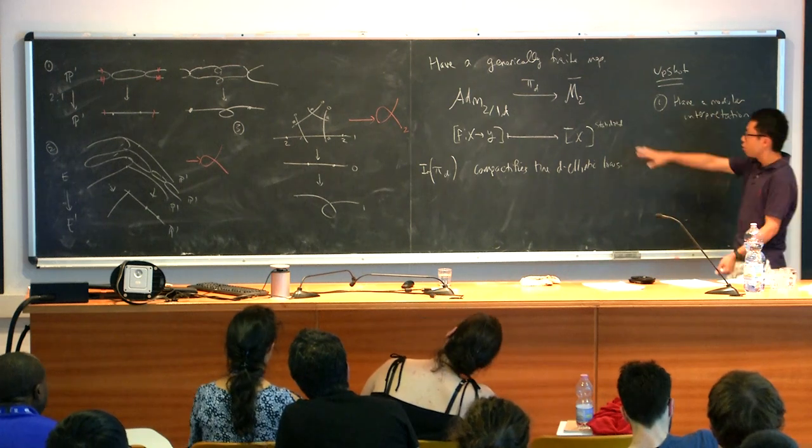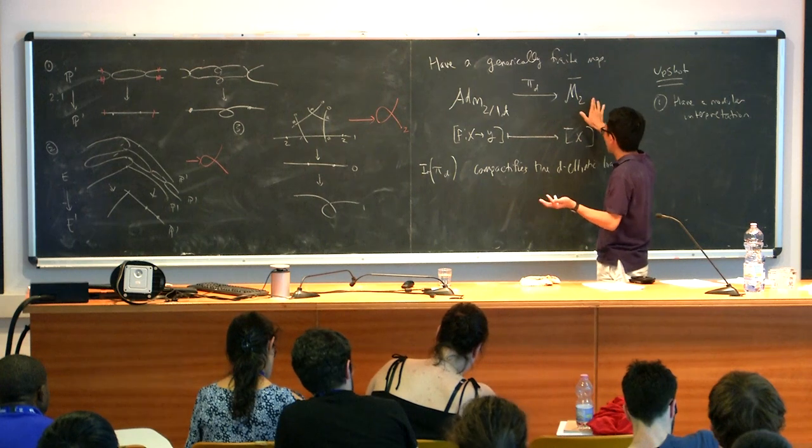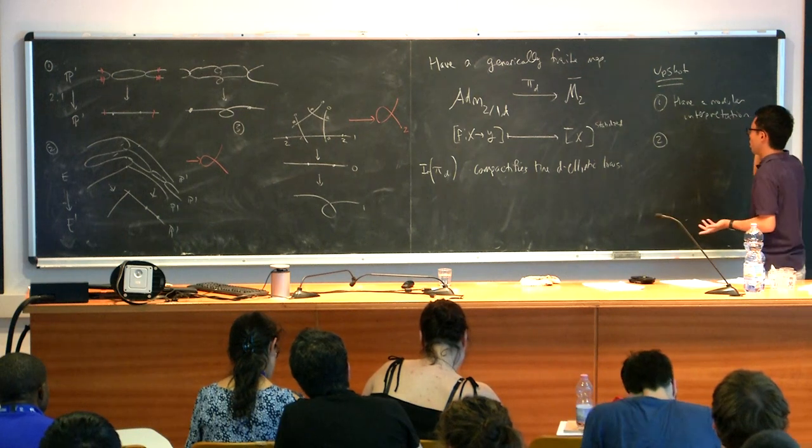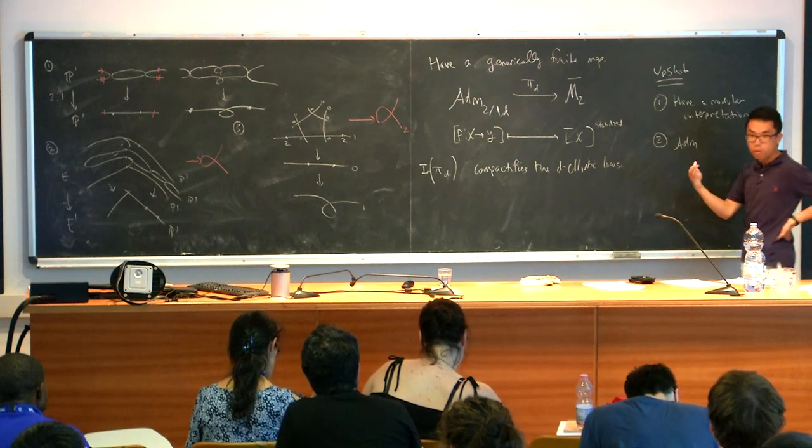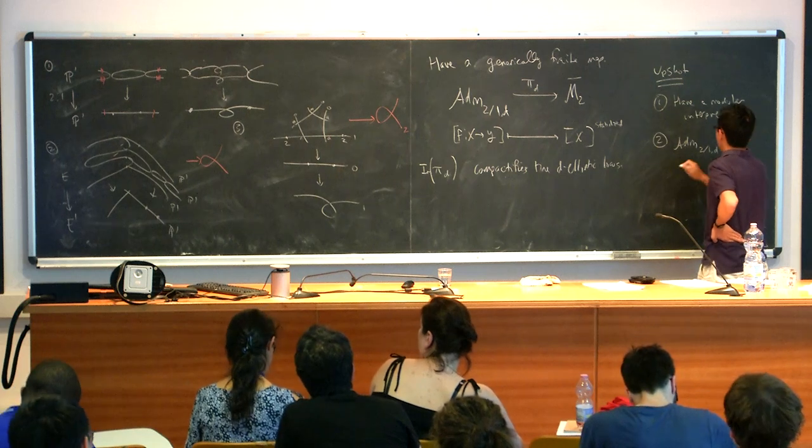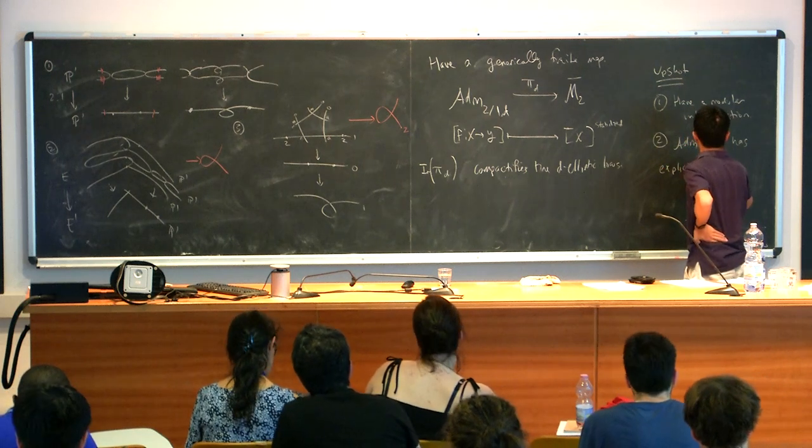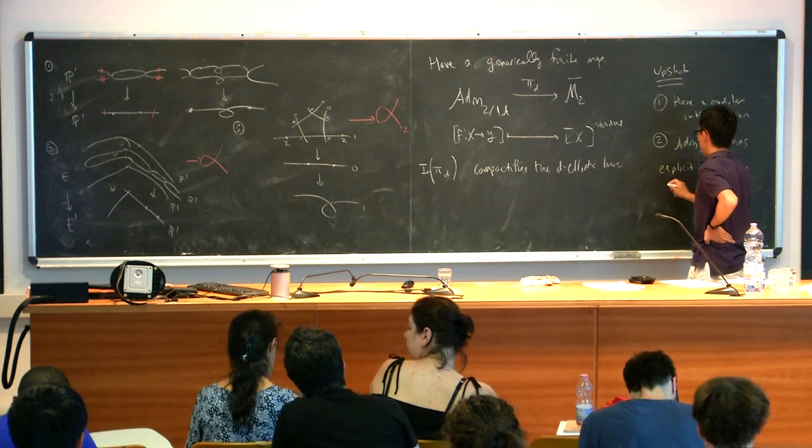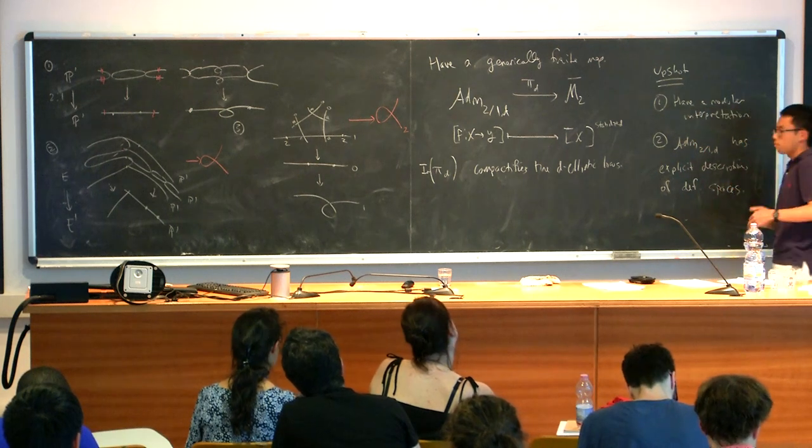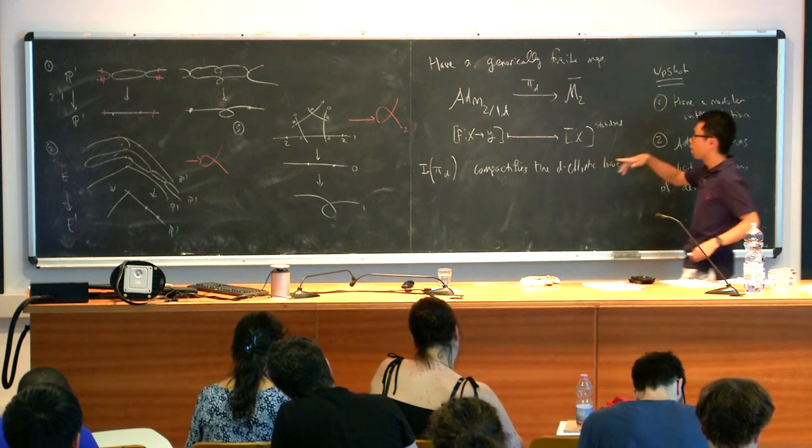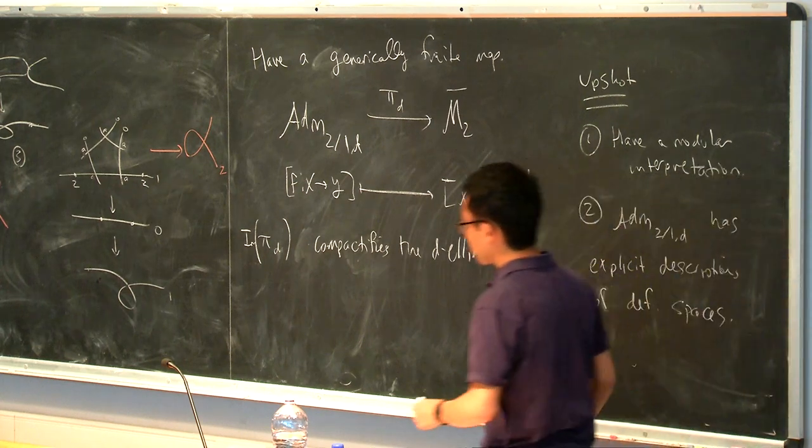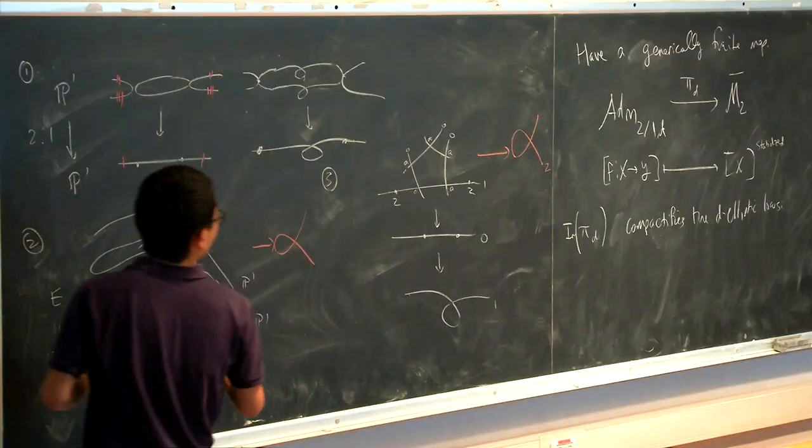So we have a modular interpretation. So I can tell you in principle, I can tell you what the image of this map is in terms of what the points are. And not only that, but we're doing intersection theory, so in order to compute intersection multiplicities, we need to know something about deformations. And in fact, Harris and Mumford give explicitly, explicit descriptions for deformation spaces. And I said before, I threw in the word Cohen-Macaulay. And because we're doing intersection theory, that's a property we really want.